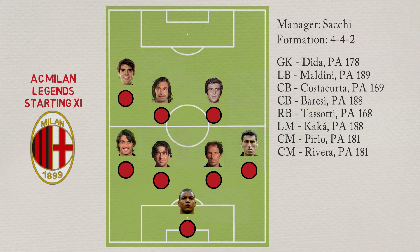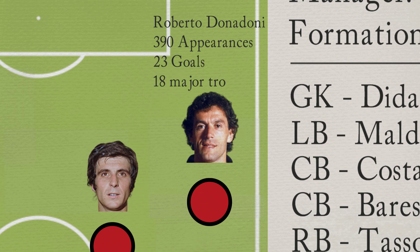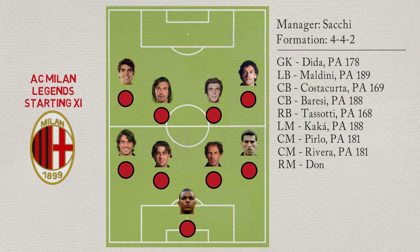On the right flank of midfield is Roberto Donadoni. In total he made 390 appearances and scored 23 goals, winning 18 major trophies. Donadoni has a potential ability of 179.